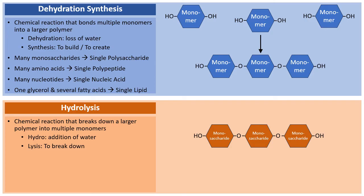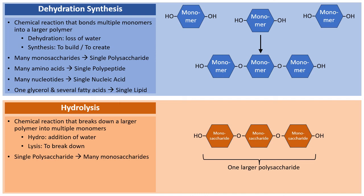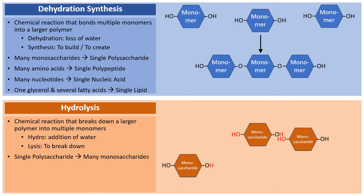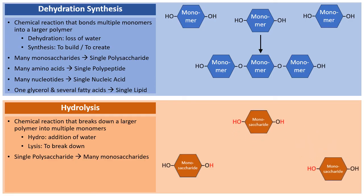For carbohydrates, a single polysaccharide can be broken down into monosaccharides through hydrolysis. With the addition of a water molecule, the polysaccharide is broken apart, and adding another water molecule breaks the remaining pieces, resulting in three monosaccharides broken down from the one starting polysaccharide.